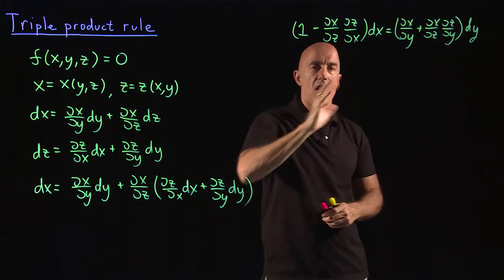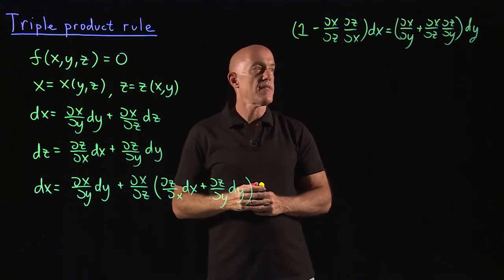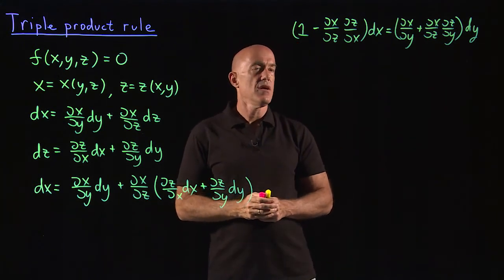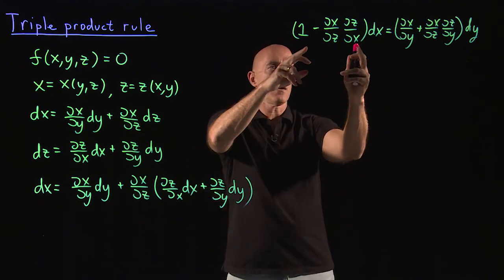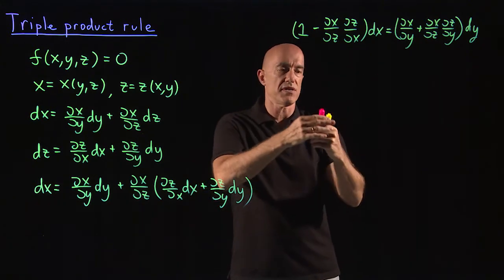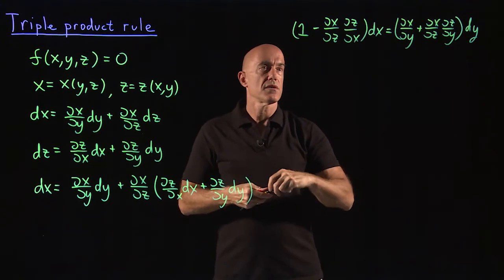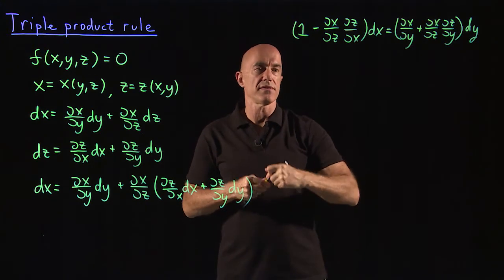So dx and dy are independent variables that can take any values. So in order for this equality to hold, the terms in the parentheses must be zero. So let's start with the first term in parentheses.